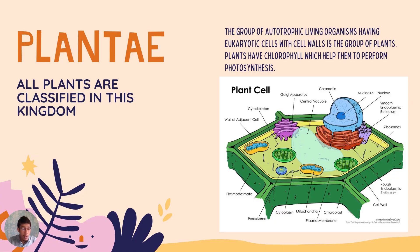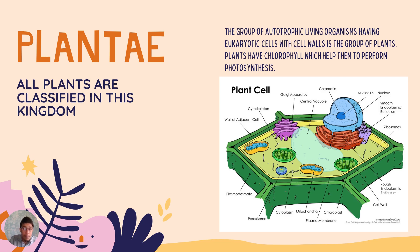All the plants on the earth have been classified under Kingdom Plantae. Kingdom Plantae is the group of autotrophic living organisms having eukaryotic cells with cell walls. These are mostly multicellular organisms, and their cells have cell walls.